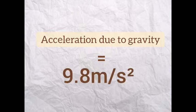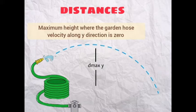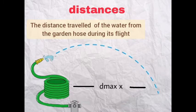which is equal to 9.8 m/s². For the distances, there are only two displacements that we should give attention. These are the maximum height where the garden hose's velocity along y-direction is 0 and the distance traveled by the water from the garden hose during its flight.